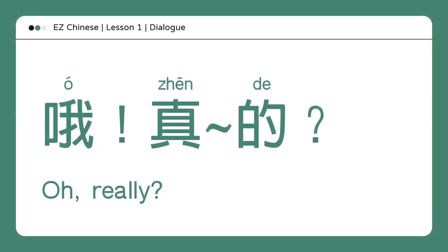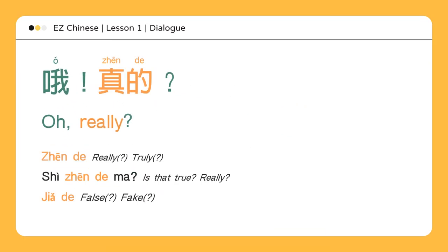哦，真的？Oh, really? 真的 means "really" or "truly." 是真的吗？Is that true? Really? 假的 means false or fake.